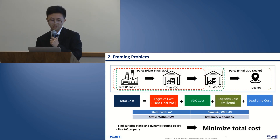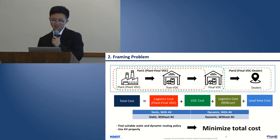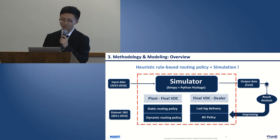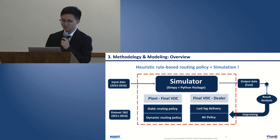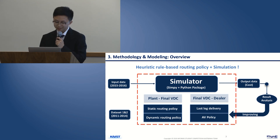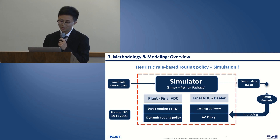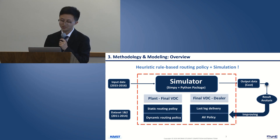For four different scenarios — static with and without AV, and dynamic with and without AV — we want to find suitable routing policies and use AV properly to minimize the total cost. We considered and tried many possible methods, like traditional mathematical methods, multi-agent reinforcement learning, and simulation optimization. But after much failing experience, we built a simulator with SimPy and other Python packages, and solved these problems by testing some heuristic rule-based routing policies on it.